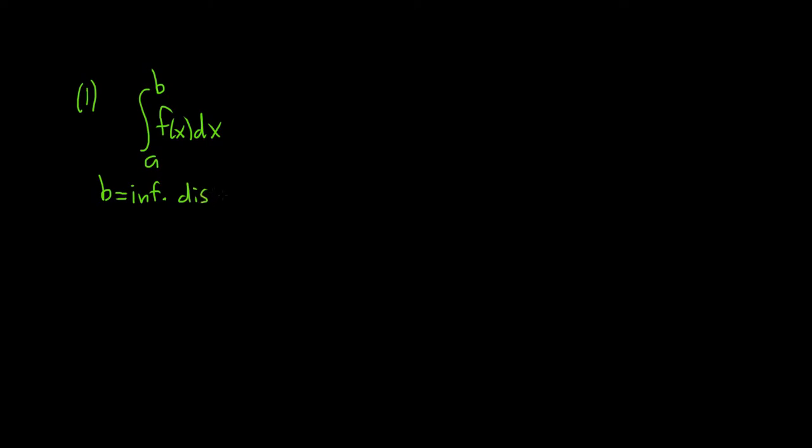We'll assume f is continuous everywhere else. So if there's a discontinuity at b, what you do, assuming a is less than b, is you replace the b with a variable, so like c. And then what you do is you have to let c approach b, but from which direction? So here's the thing.